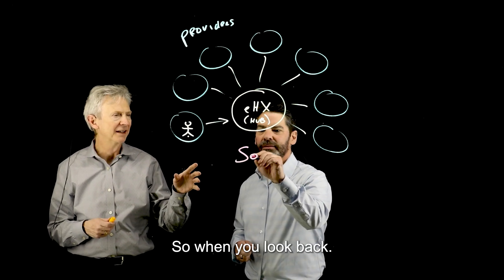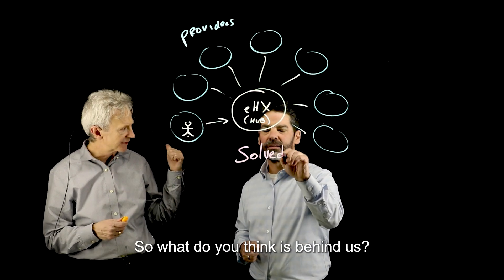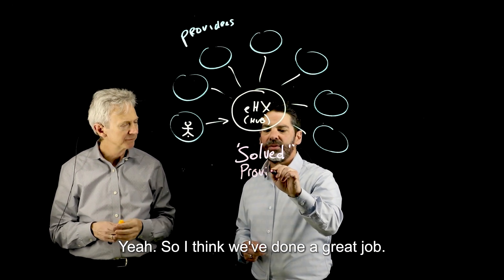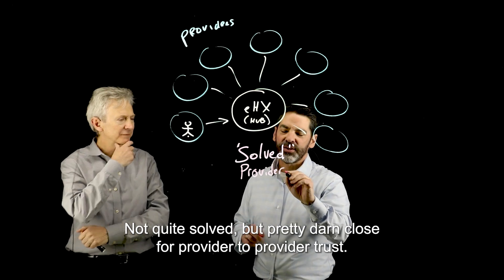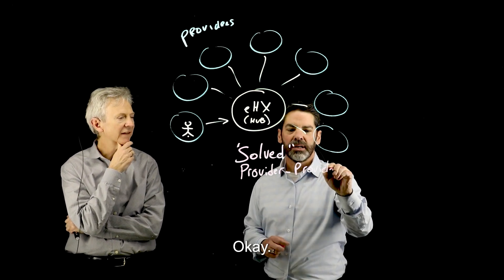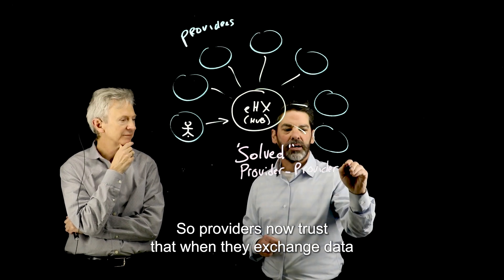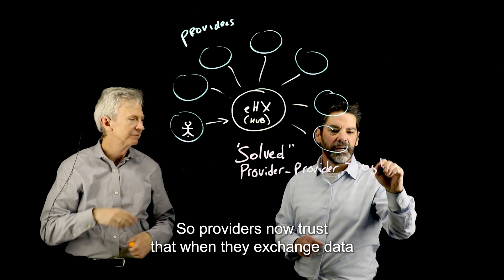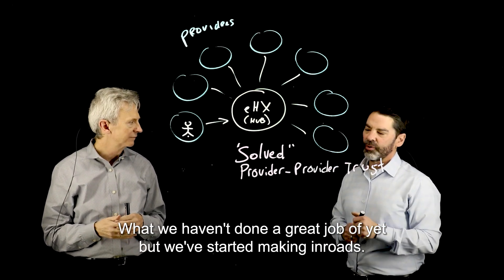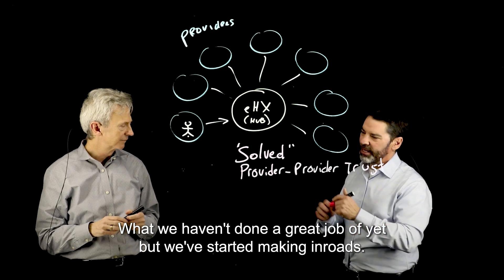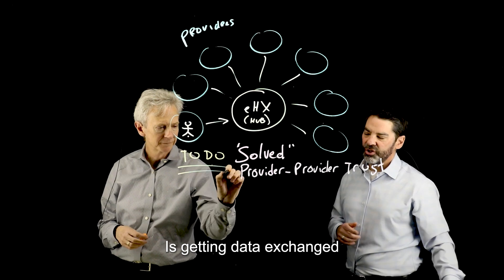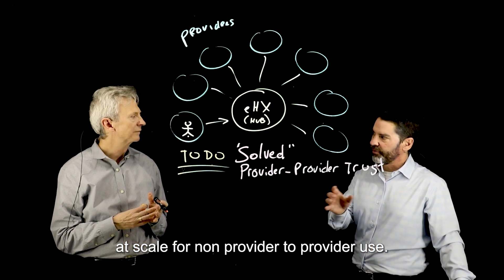So when you look back, what do you think is behind us? I think we've done a great job — not quite solved, but pretty darn close — for provider-to-provider trust. Providers now trust that when they exchange data among each other, it's going to be used responsibly. What we haven't done a great job of yet, but we've started making inroads, is getting data exchanged at scale for non-provider-to-provider use.